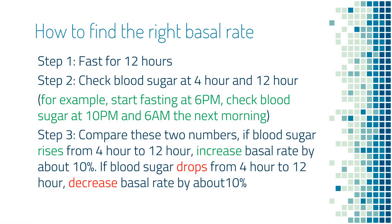How do you find out if your basal rate is correct? You will need to select 12 hours in a day and fast over the whole 12 hours. This is typically easier to do at night, as you won't eat in sleep anyway. Check your blood sugar at 4 hours and check it again at 12 hours, then compare those two numbers.